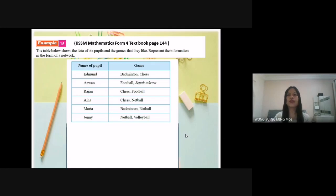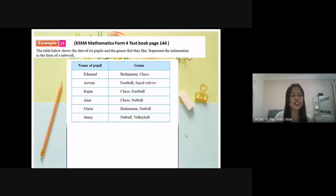Based on the table, between type of game and name of pupils, which group will you use to represent the vertices? According to the table, the type of game is more suitable to represent the vertices because more than one pupil likes to play each type of game.